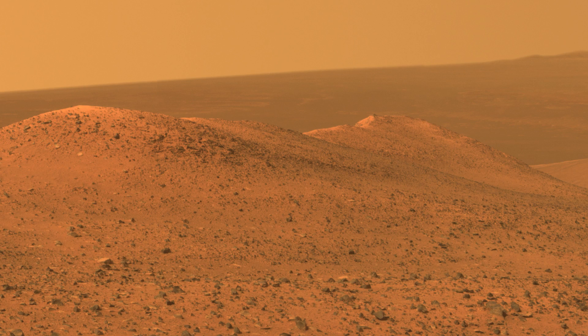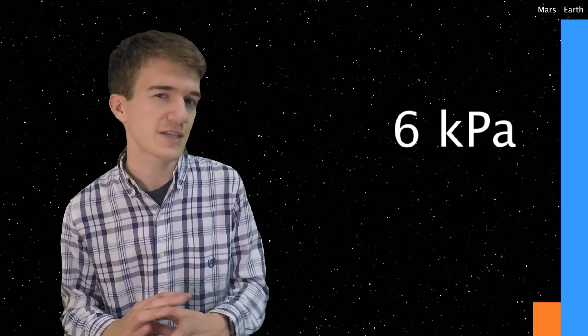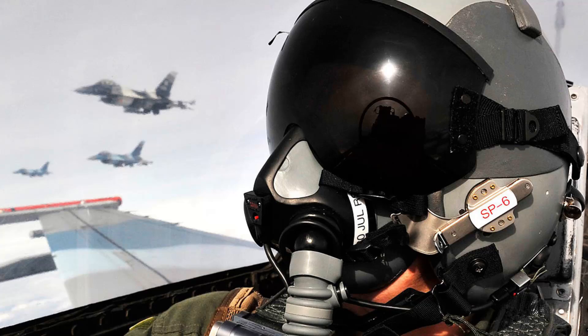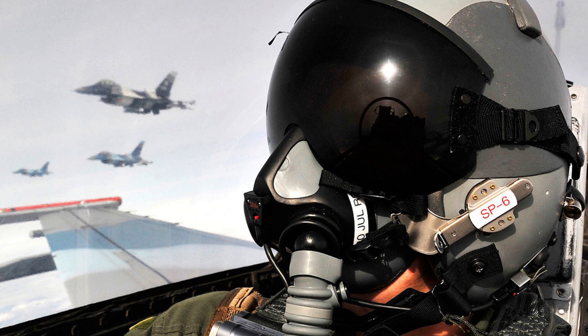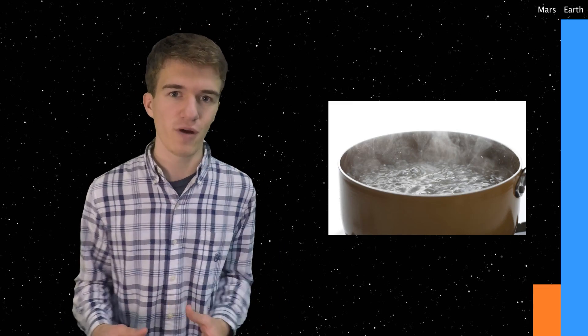Now, how big of an atmosphere do you need in order to breathe and walk around? Well, to start off, there's something called Armstrong Limit. And the Armstrong Limit is at 6 kilopascals, or roughly 6% of Earth's atmosphere. It's at this point when any saliva, any tears, any open moisture on your body evaporates or boils instantaneously. And this is a major problem.